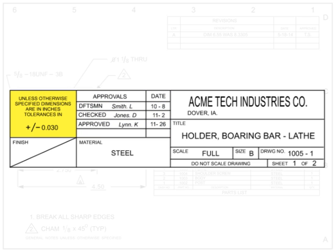Tolerances are defined as the difference between the lowest and highest acceptable limits of a dimension. It is almost impossible to machine parts to the exact dimension called out on the drawing. The tolerances block contains the default tolerances for dimensional callouts where no tolerance is otherwise noted on the drawing, and should be followed unless specifically marked otherwise. Examples of tolerances are plus or minus 0.030, or plus 1/64th of an inch.